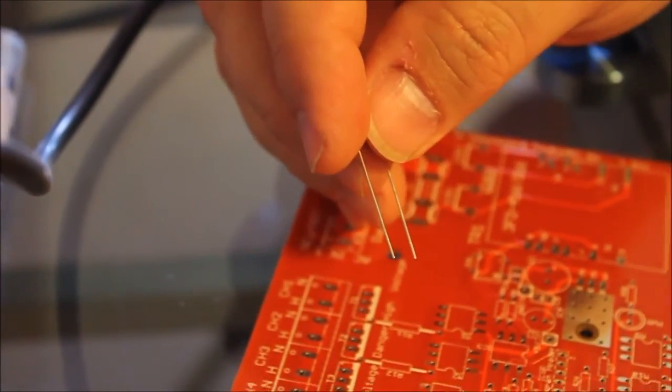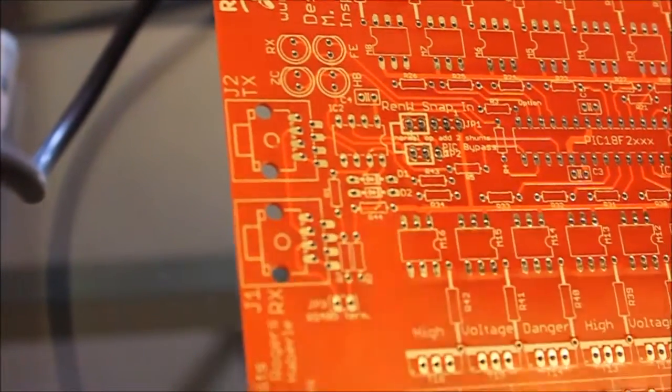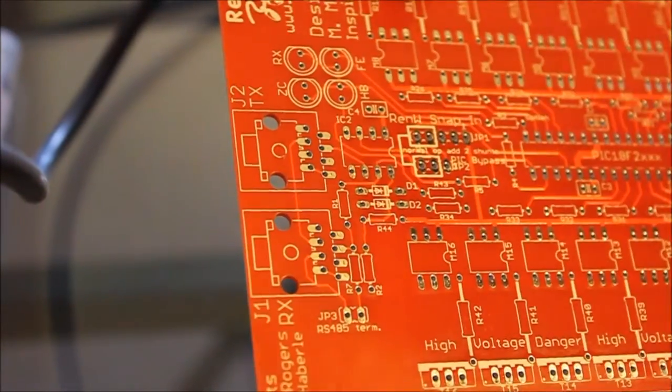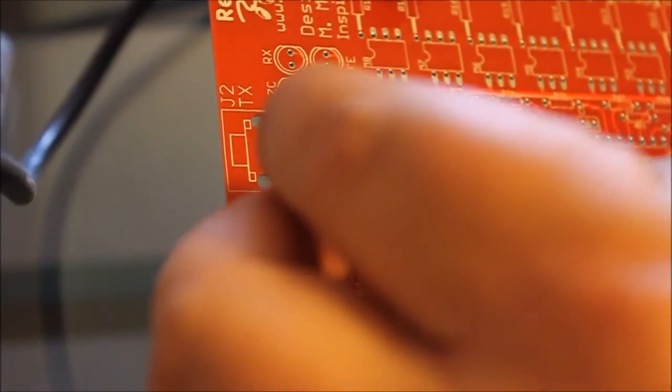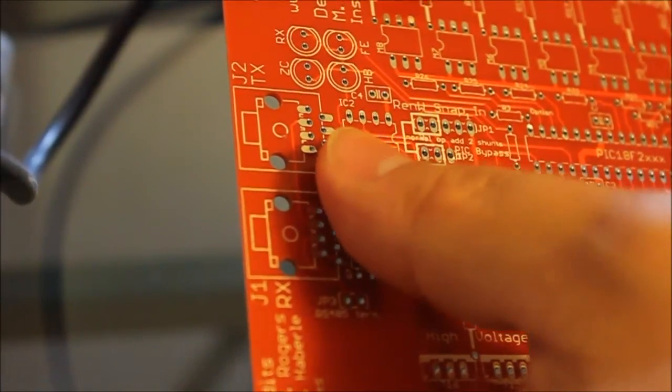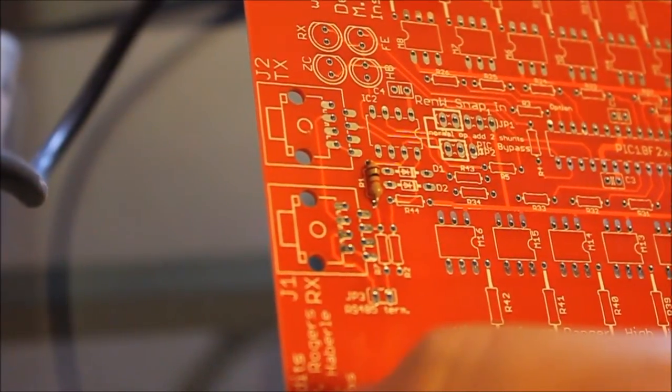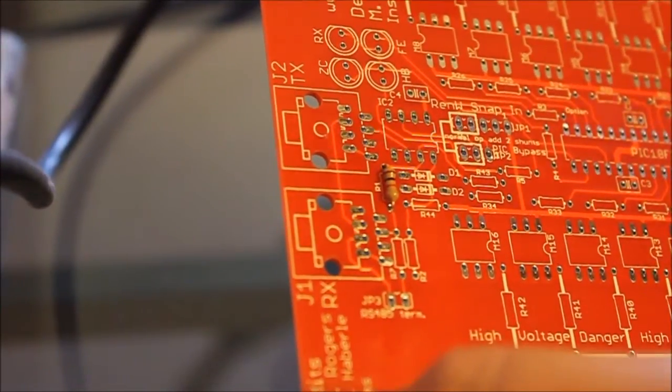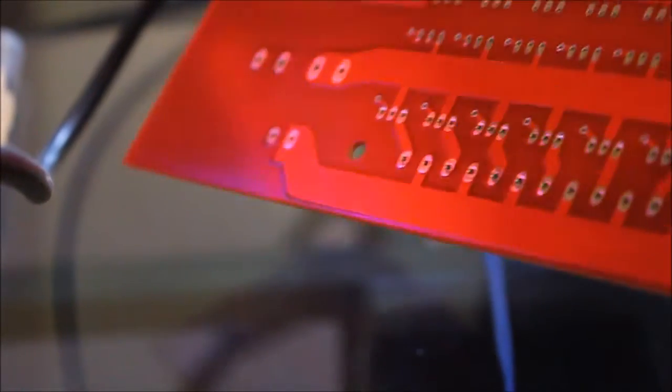Now bring the PCB back up and find R1. Take the resistor. We're going to center it into the two holes, just on either side of R1, and push it until it stops. That's the first step to building this board. Did you notice? I didn't worry about which direction it was. Push it all the way to the bottom.